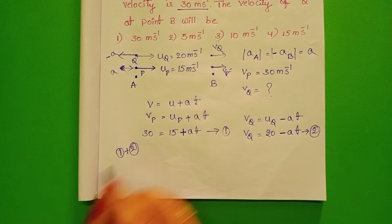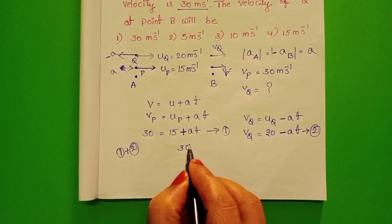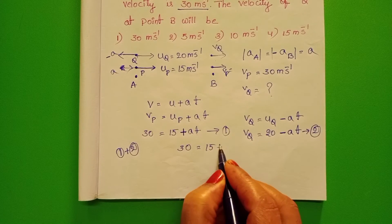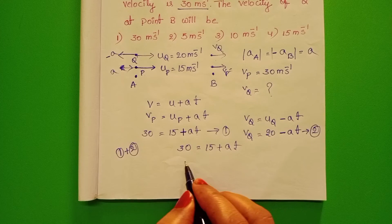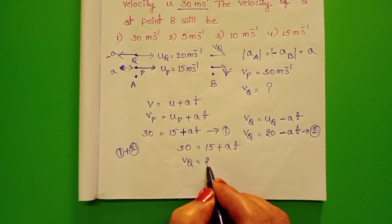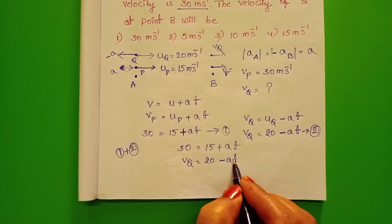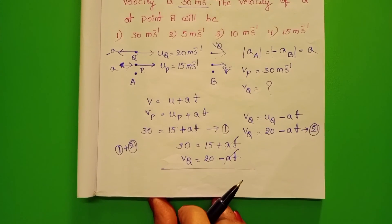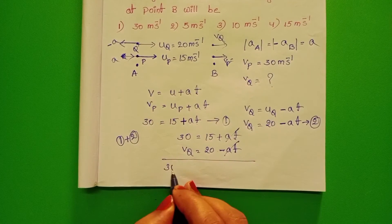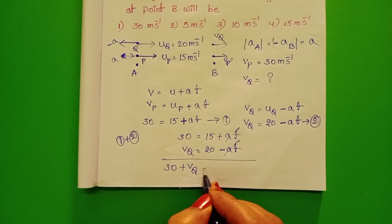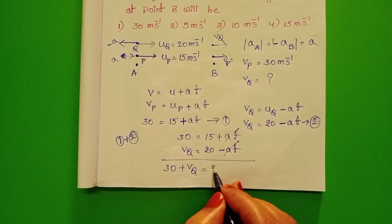take equation 1 plus equation 2. 30 is equals to 15 plus A T. V Q is equals to 20 minus A T. Plus A T minus A T get cancelled. 30 plus V Q is equals to 20 plus 15, 35.